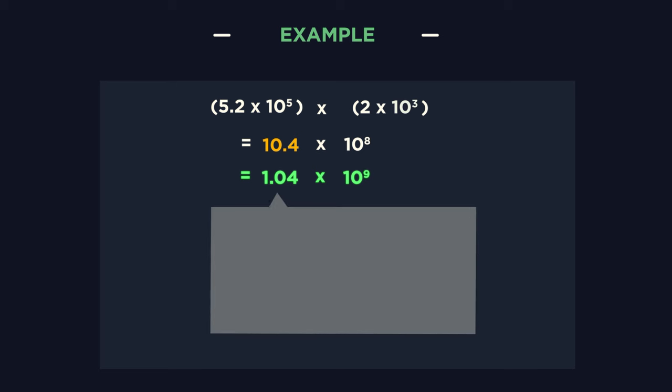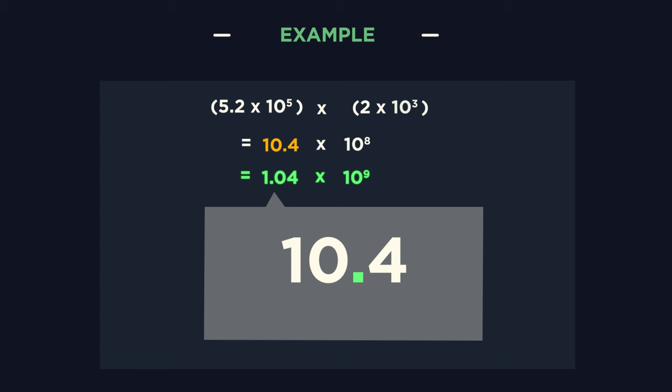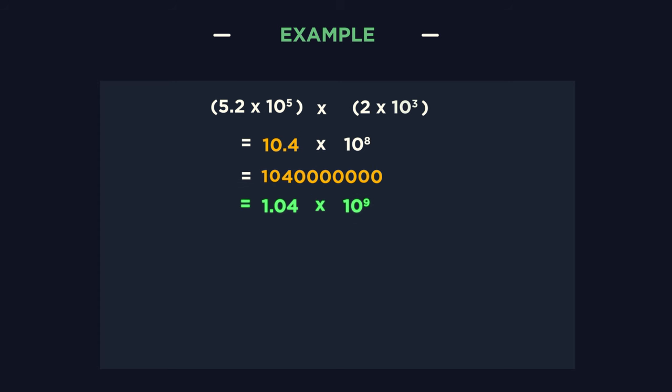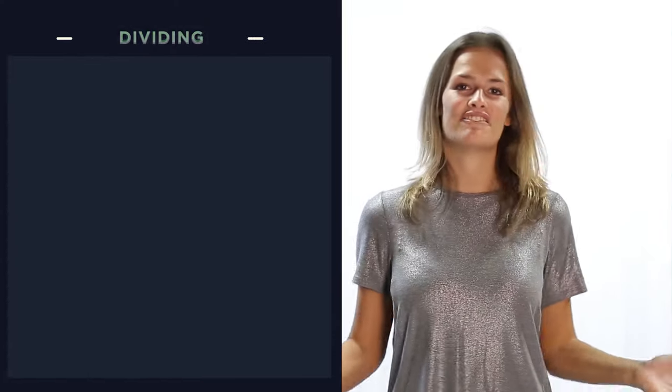Some of you may easily be able to see that because we need to move the decimal place left one place from 10.4 to 1.04, so we add in an extra jump to the times 10. So it's times 10 to the 9. But if you're unsure, just write out into an ordinary number and then rewrite it back into standard form again. So dividing follows the exact same process.